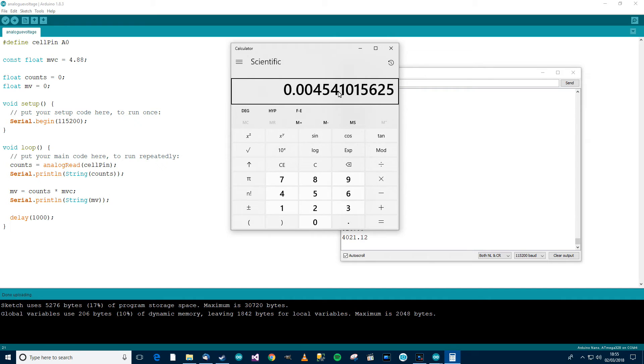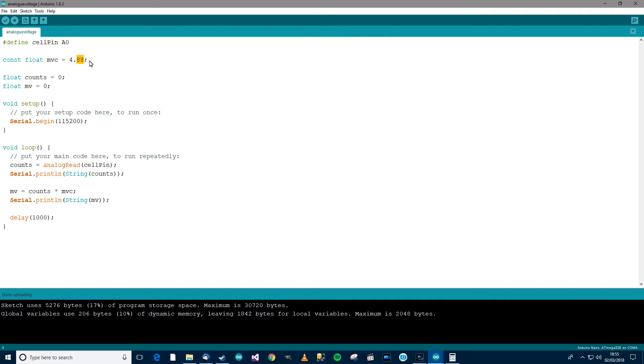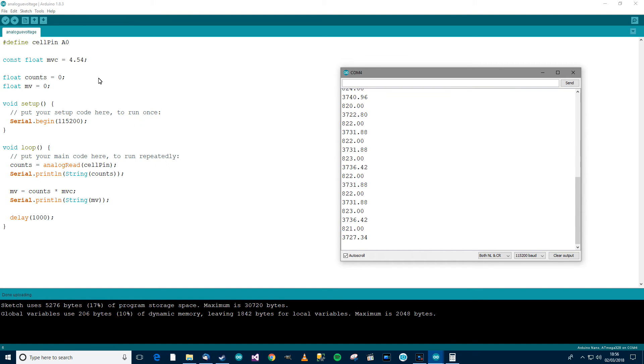Anyway, so 4.65 divided by 1024 equals 4.54 millivolts. So 4.54 millivolts. So if I just change this, 4.54 millivolts, and control T, control S, and control U. This thing should work now and it should be very, very accurate. Let's see. Okay, it's done uploading. So if I do control shift and M to get the console up, what we should see is that the voltage will be reading 3.73 or whatever it was.